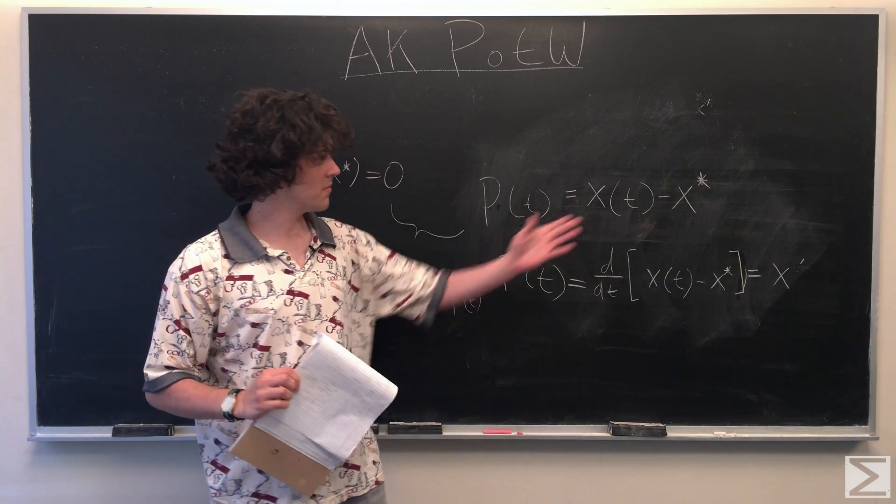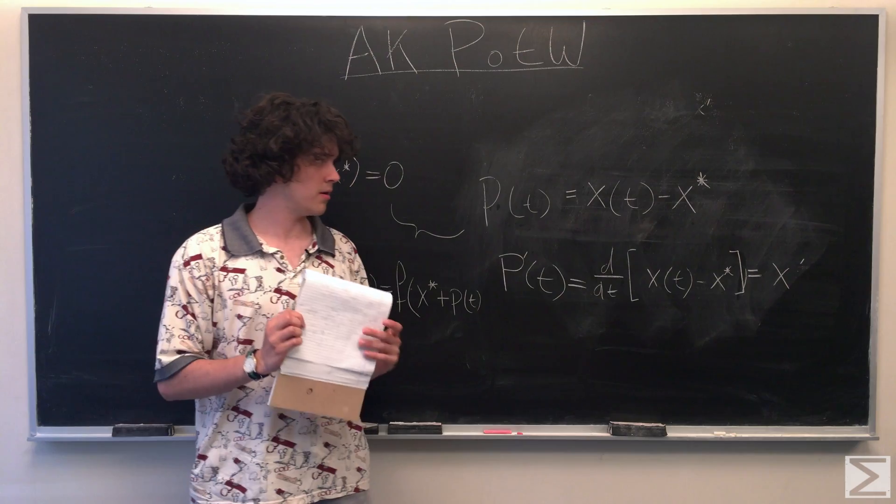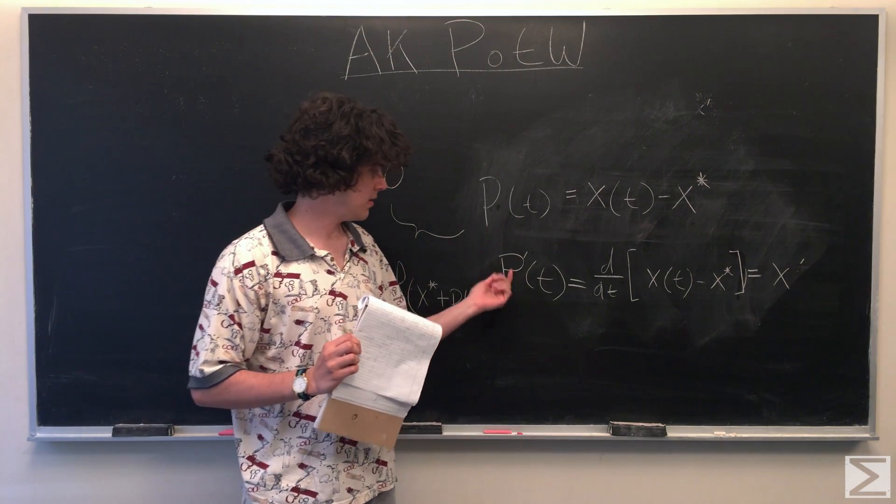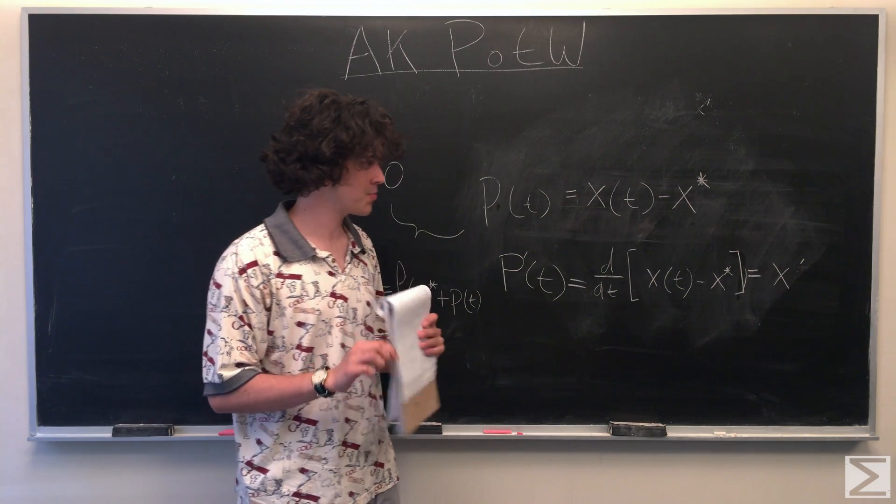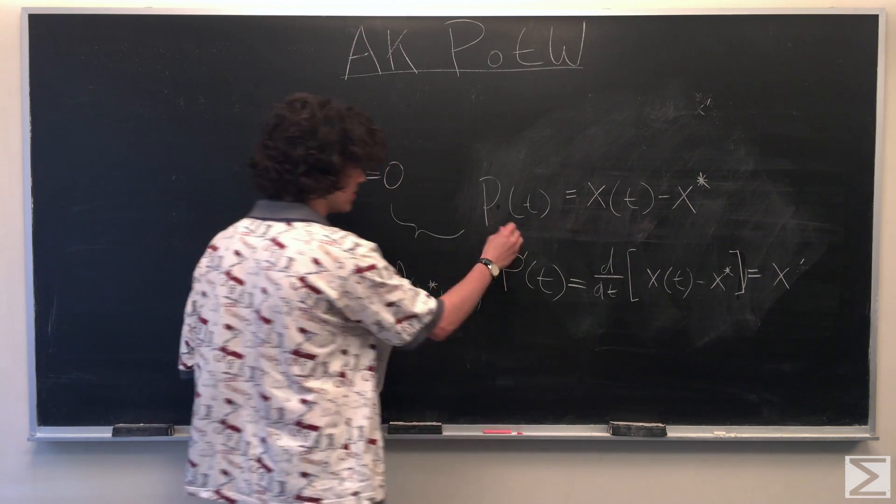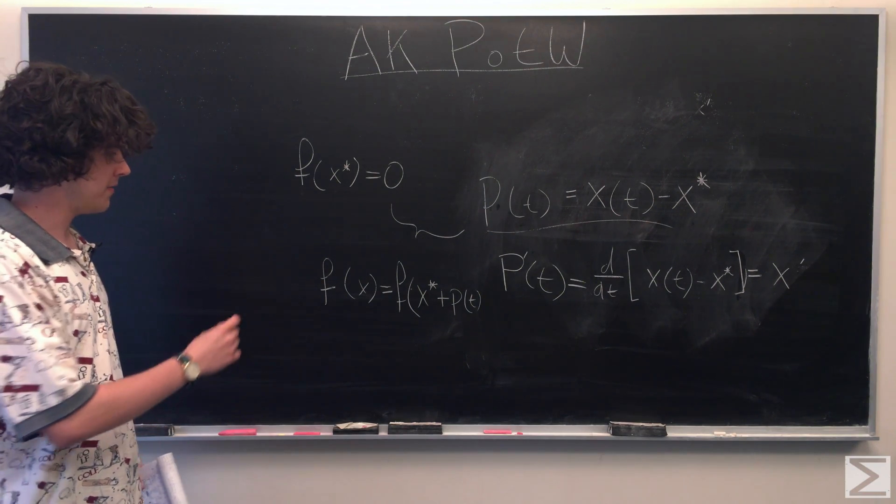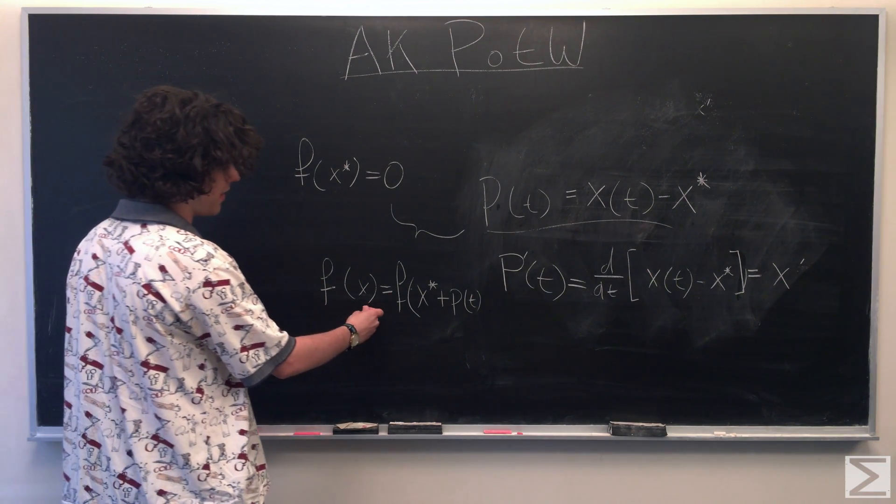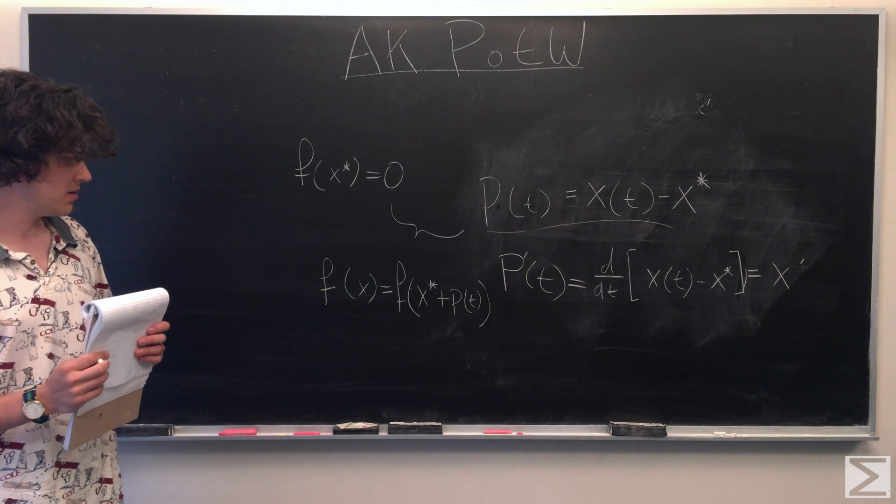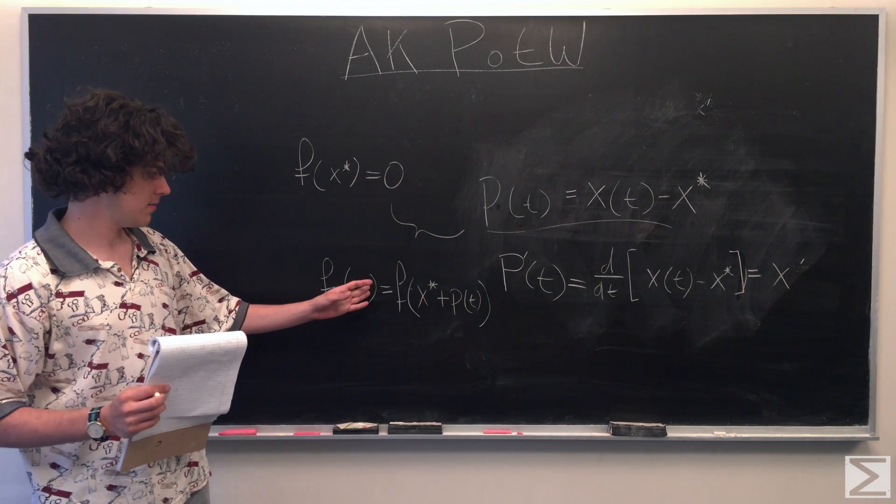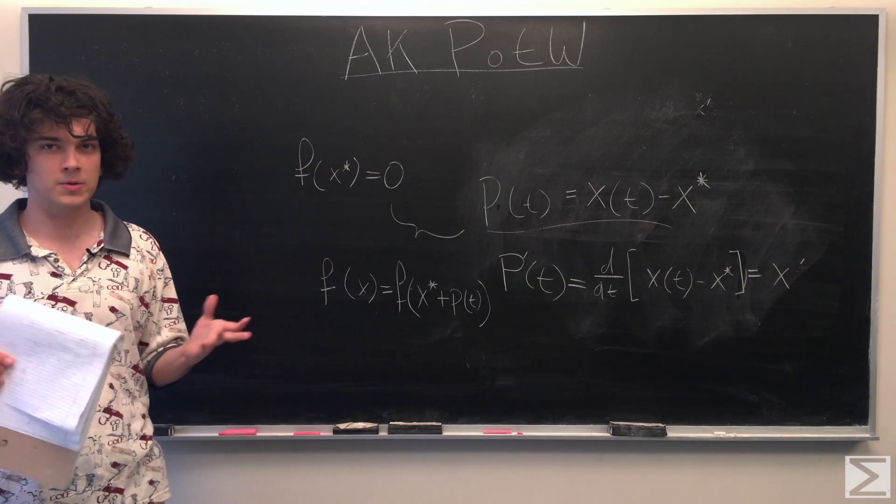So since our fixed point is obviously a constant, it's just a location on our x-axis, the derivative with respect to time of this is just going to be the same as x prime. And this equation here also gives us the fact that f of x is equal to f of x star plus our perturbation function. Here it's kind of understood that x is changing with time in our dynamical system.